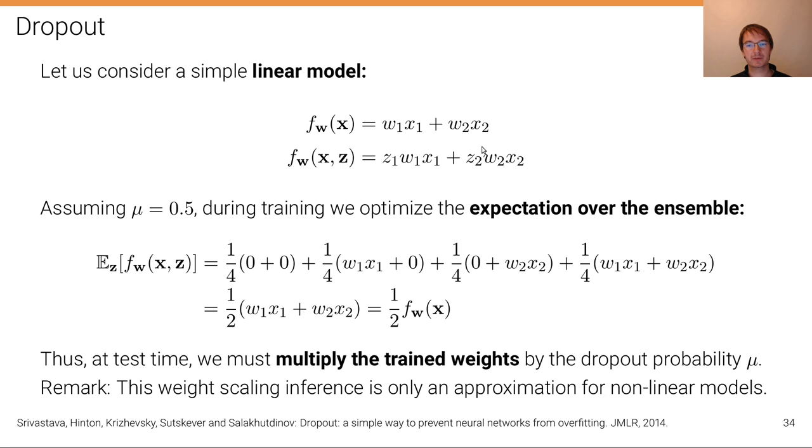Now we can write the dropout equivalent as f_w(x, z) as z₁w₁x₁ plus z₂w₂x₂, where z is either zero or one depending on if this connection has been dropped or not. Now assume μ, this dropout probability, to be 0.5. During training what we do is we optimize the expectation over the ensemble. So we're optimizing this expectation over all possible combinations of binary mask vectors.